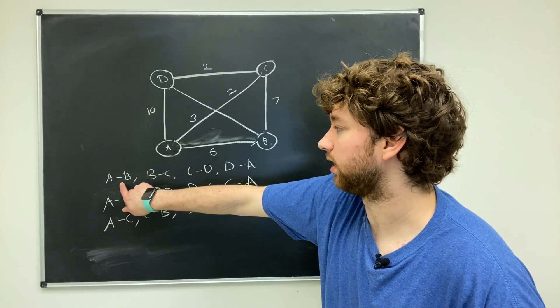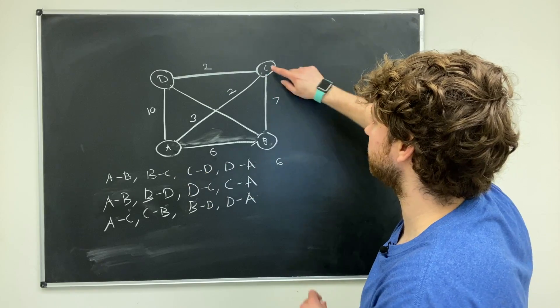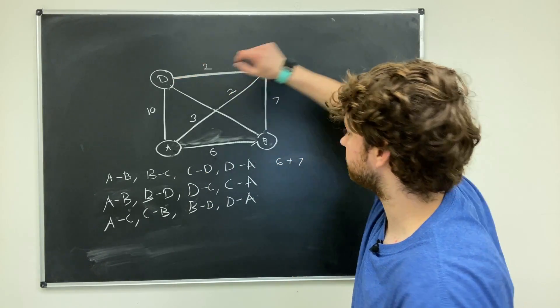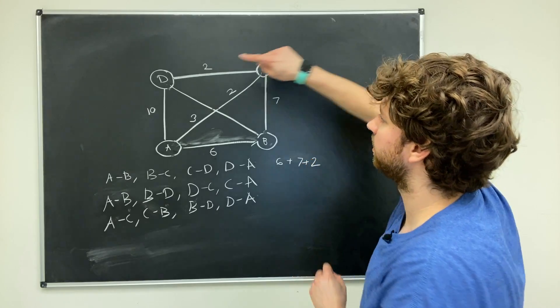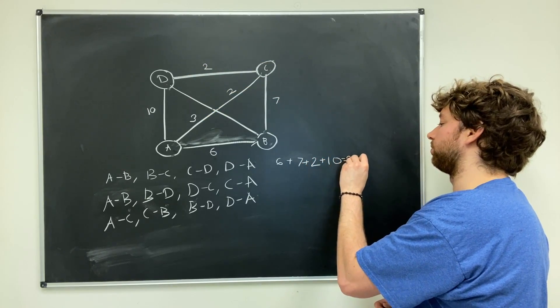So now let's figure out which path is best. And to do that, we just take a look at each step. A to B is 6. B to C is 7. So 6 plus 7. C to D is 2. And then D to A is 10. This should add up to 25, I think.